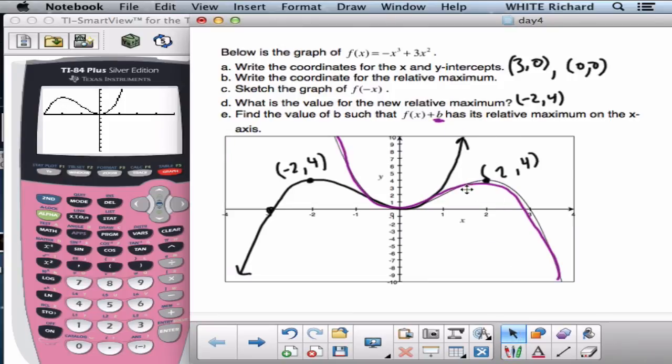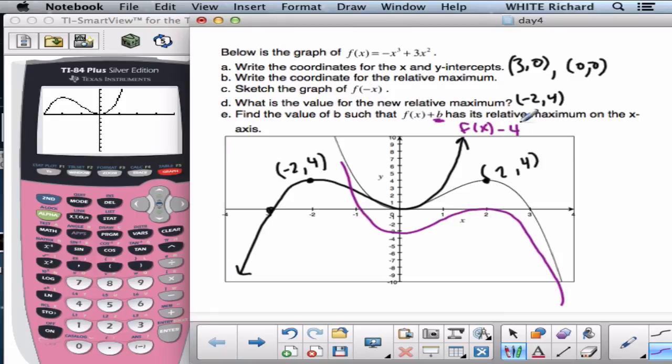So what I want to do is I want to literally move it down to right there. Which means this transformation means I need to move it down 4. So f of x minus 4. Or you could say that b is negative 4. b is negative 4.